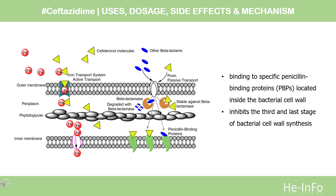Mechanism of action. Ceftazidime is a semisynthetic third-generation cephalosporin with broad activity against numerous gram-negative and some gram-positive bacteria. Like other beta-lactam antibiotics, ceftazidime exhibits its bactericidal effect primarily through direct inhibition of penicillin-binding proteins (PBPs) in susceptible bacteria. In vitro experiments in gram-negative bacteria such as Escherichia coli, Pseudomonas aeruginosa, Acinetobacter baumannii, and Klebsiella pneumoniae suggest that ceftazidime primarily binds to PBP-3, with weaker binding to PBP-1A and PBP-2 as well. Although binding to other PBPs such as PBP-4 is detectable, the concentrations required are much greater than those achieved clinically.